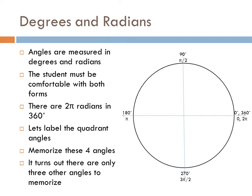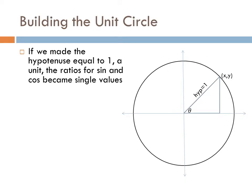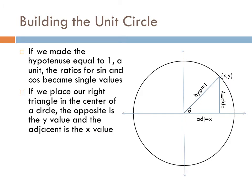It turns out there are only three other angles to memorize. Now let's build our unit circle. If we made the hypotenuse equal to 1 — which is a unit — then the ratios for sine and cosine become single values. If we place our right triangle in the center of a circle with radius 1, then the opposite is just the y value and the adjacent is just the x value. So in a unit circle, the sine of theta is the y value and the cosine of theta is the x value.